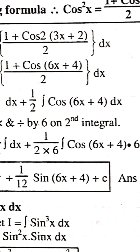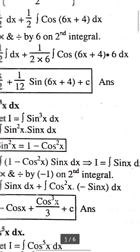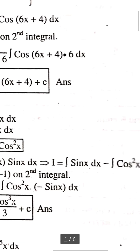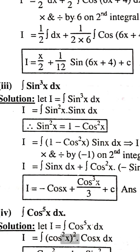This is example number 3: integration of sin³x dx. We break sin³x as sin²x · sinx. Using the identity sin²x = 1 − cos²x, we get integration of (1 − cos²x) · sinx dx. Integration of sinx dx = −cosx, and we handle the cos²x · sinx term separately.